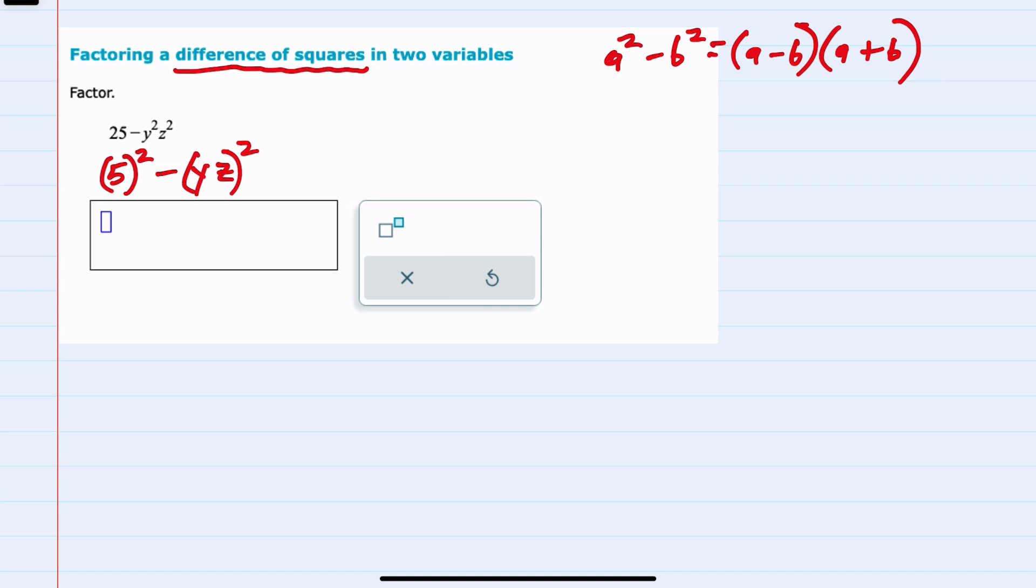From here, I can see that my a term is 5, and my b term is yz.